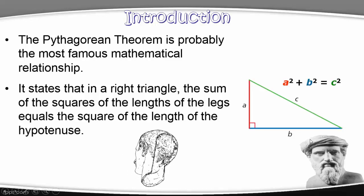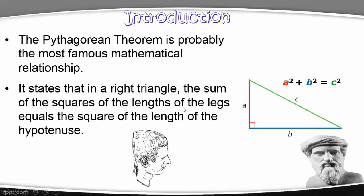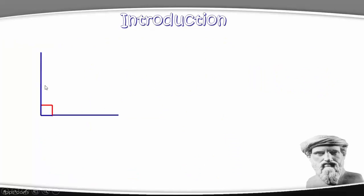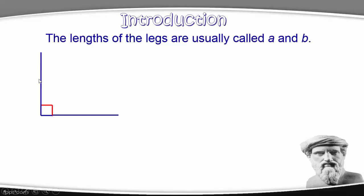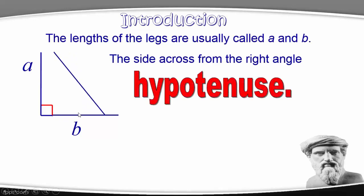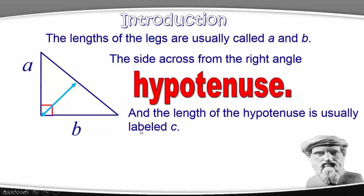This was mentioned earlier when we were talking about irrational numbers and the square root of 2, where we used the Pythagorean Theorem. The two sides that come together to form the right angle are called legs, with lengths A and B. The side across from the right angle is called the hypotenuse, and this little square here means that it's a right angle. We often call the hypotenuse C.